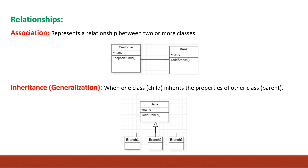Now we will see the relationships of a class diagram. The first relationship is association. Association is a line that connects two or more classes together. It is a simple line drawn from one class to another, as shown in the diagram below.